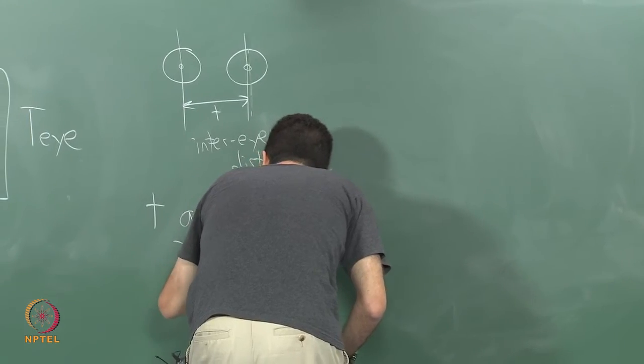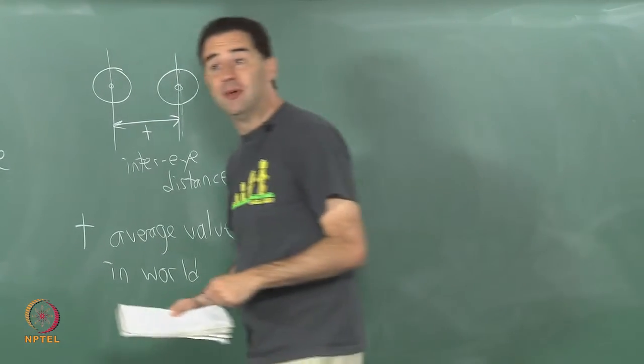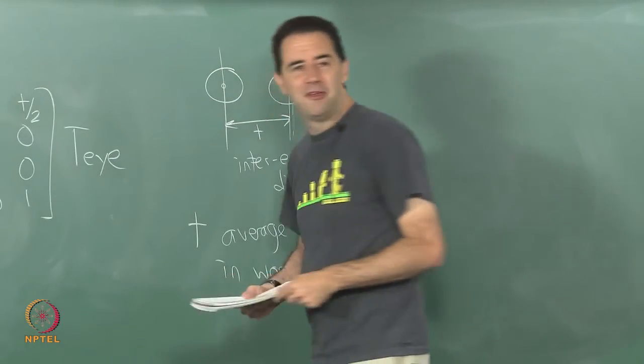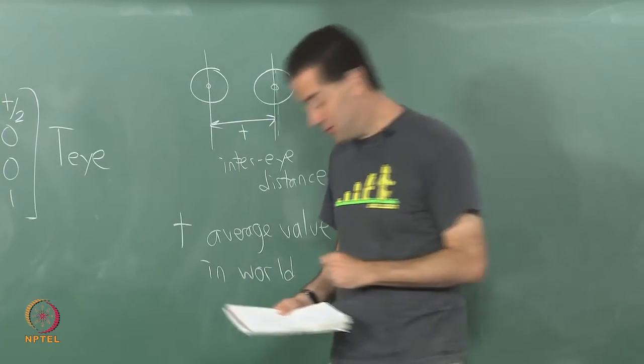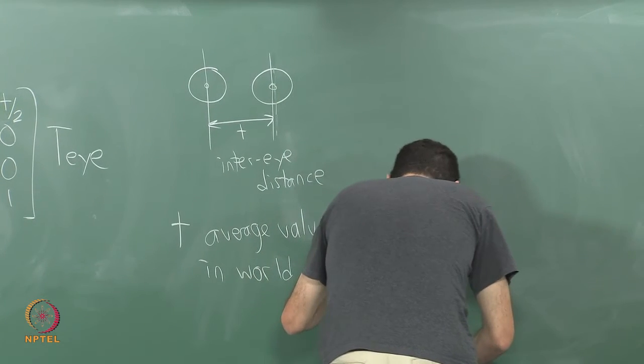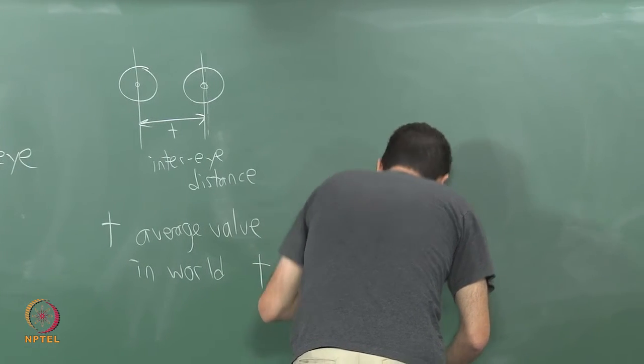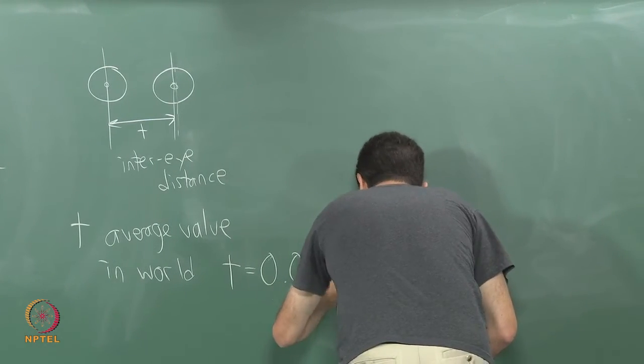I mean in the real world, in this case, right, like on the earth among humans—not among the monkeys running around on your campus, but among the humans—is equal to 0.064 meters, or 64 millimeters.